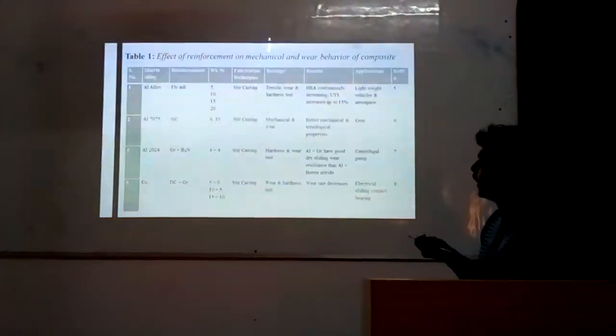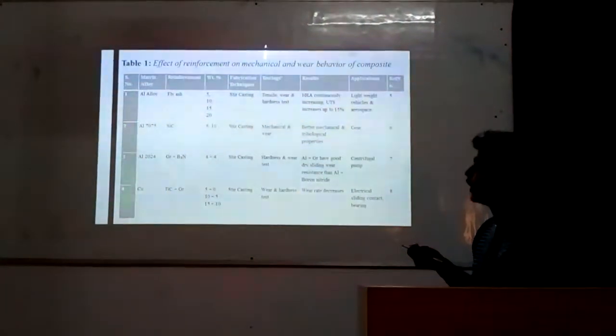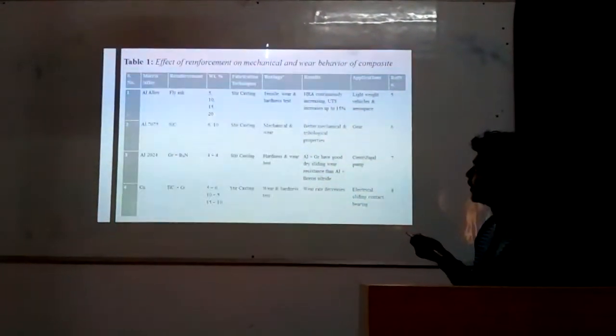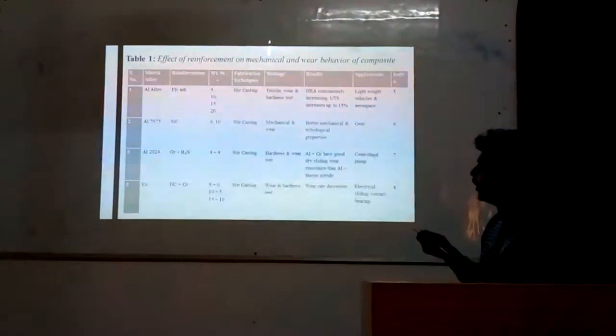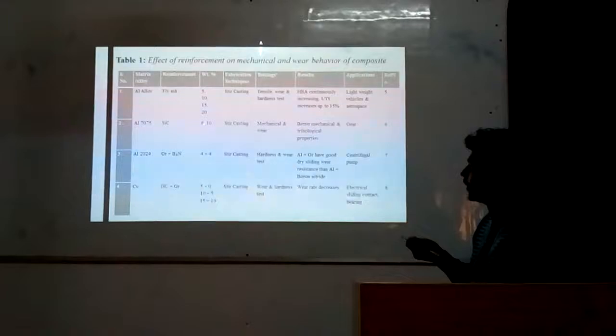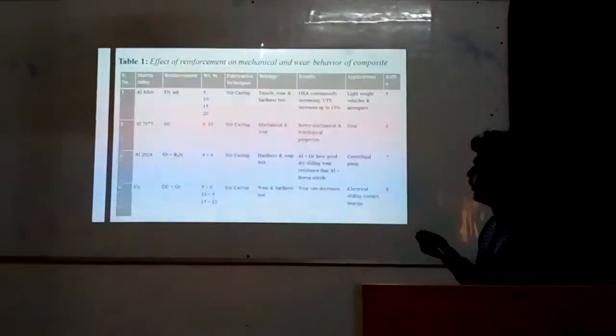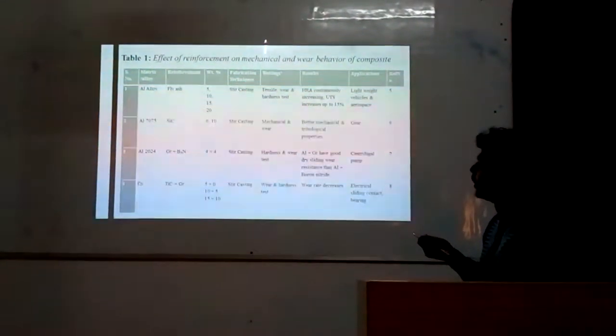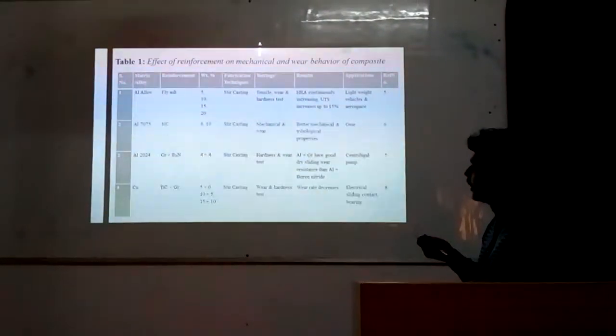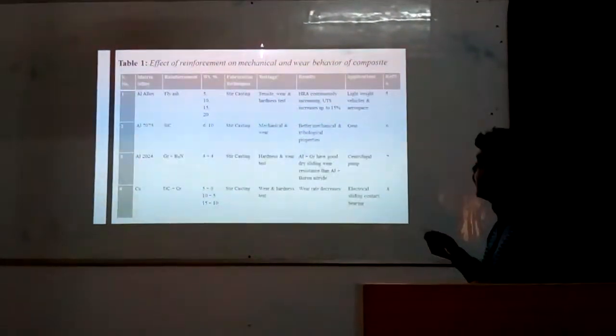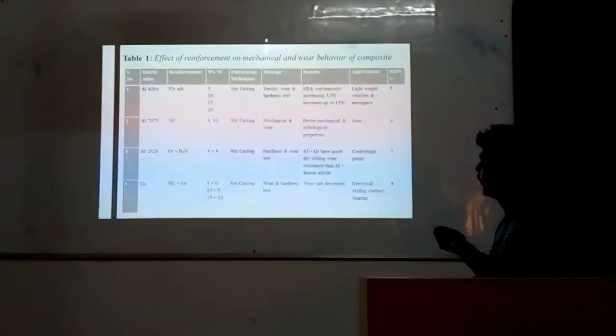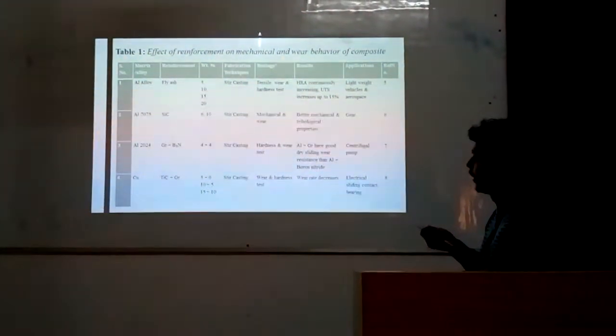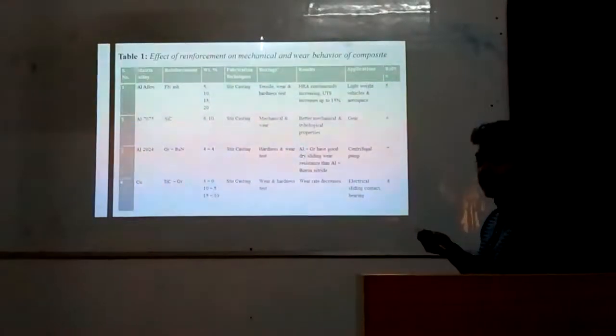Next is aluminum 7075, an aluminum alloy reinforced with silicon carbide. Weight percent mixed is 6% and 10%. The fabrication technique is stir casting and testings performed are mechanical testing and wear test. Results obtained show better mechanical and tribological properties up to 10%.